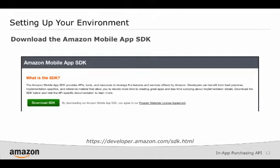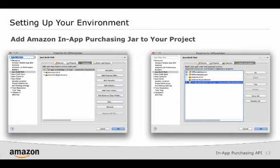Go to the Amazon Developer Portal at developer.amazon.com/sdk.html to download the Amazon Mobile App SDK which contains the In-App Purchasing API. Add the Amazon In-App Purchasing JAR file to your project by downloading the SDK, then in your IDE open the Java Build Path dialog, select Libraries, click Add an External JAR file and open the Amazon Ads JAR file. Be sure to check the box for Order and Export after importing the JAR file. Many developers find it useful to add the In-App Purchasing API references to their project as well, which allows you to view the reference documentation within Eclipse.